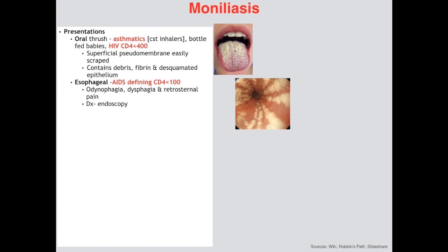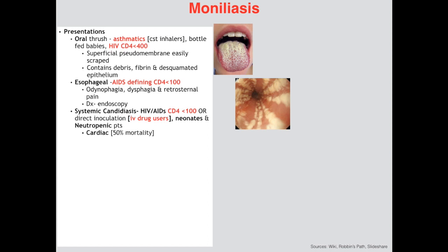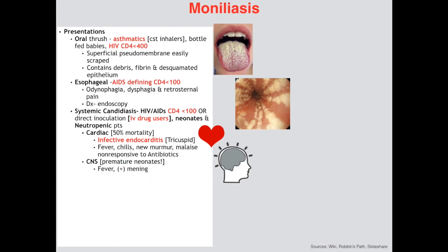Finally we have systemic candidiasis, also called candidemia. Those at risk are HIV/AIDS patients with CD4 below 100. It can also occur through direct inoculation such as with IV drug users, as well as in premature neonates and neutropenic patients. For IV drug users it can cause infective endocarditis with a 50% mortality rate — right-sided as drug users inject into veins — presenting with fever, chills, a new murmur, and malaise, and will be non-responsive to antibiotics. If you have an infective endocarditis case non-responsive to antibiotics, assume Candida. In the CNS it mainly presents in premature neonates during birth, with high fever and meningeal signs. It can also cause septicemia and disseminate to any and all organs, causing micro-abscesses systemically.